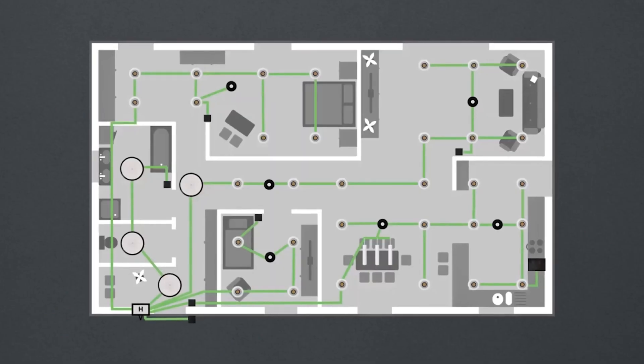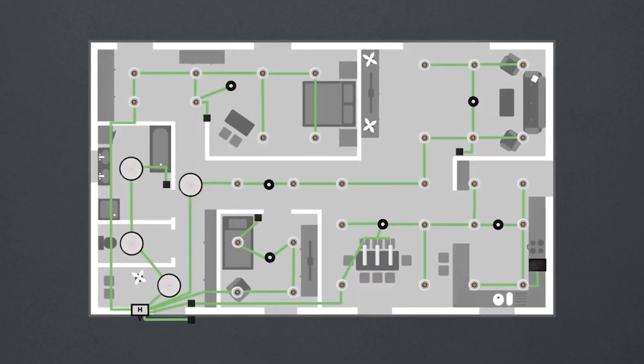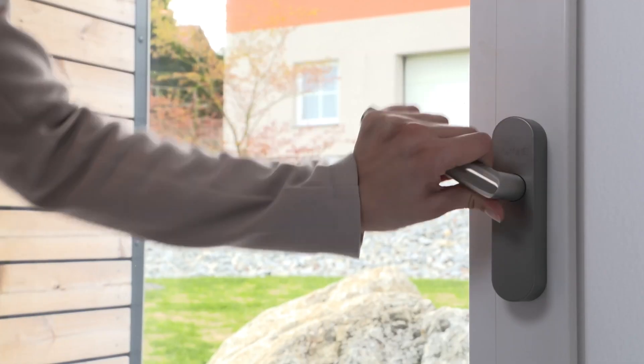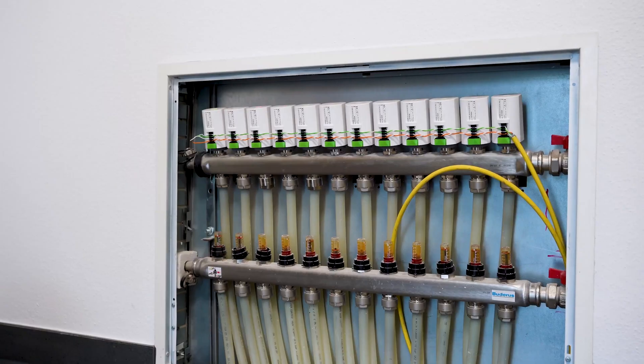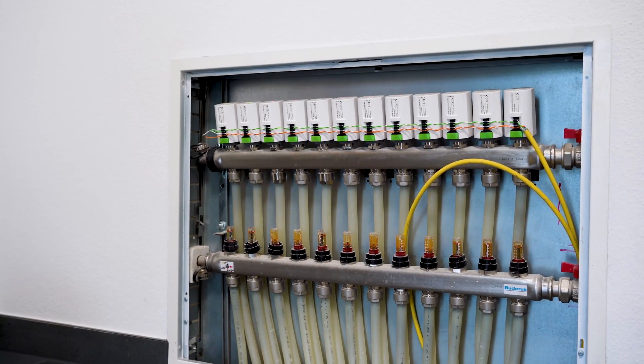For the sake of clarity, we recommend adding to the floor plan of the building where each component should be. Where do we want to install which lights, LED strips, presence detectors, buttons, window contacts, motors for the shading or heating heads, and so on.